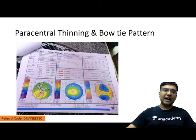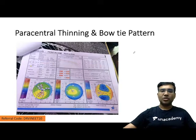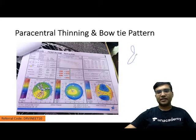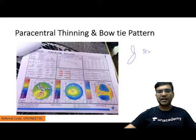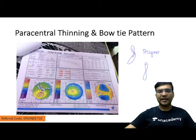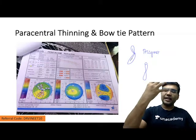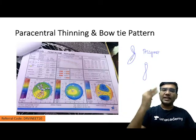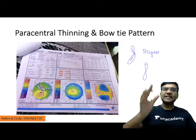Then in keratometry, if I join the lines they form an asymmetrical bow tie pattern. This asymmetry in keratometry is an important sign of keratoconus.